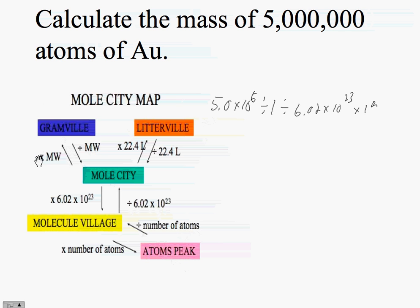Multiplied times 197. 197 is the atomic mass of gold. When we do that we get 5.0 raised to the 6th power, divided by 1, divided by 6.02, raised to the 23rd, times 197.